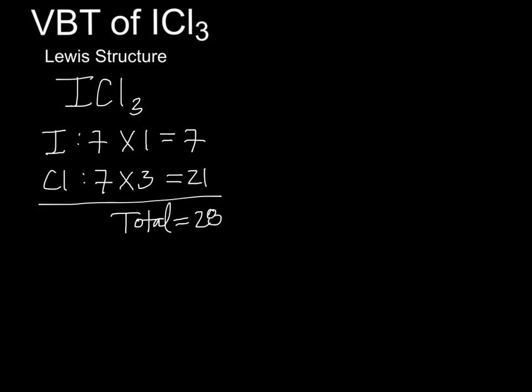Next, the central atom is determined, which in this case is iodine, as there is only one. With this, a single bond will be drawn to each of the 3 chlorine atoms, and the remaining valence electrons will be drawn as lone pairs.